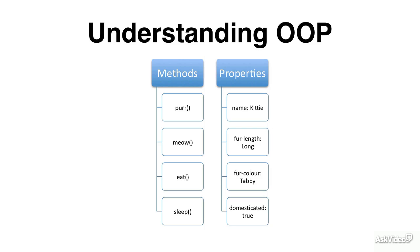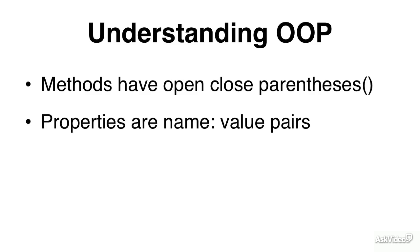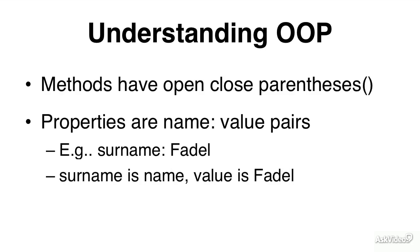Notice that the properties have a name value pair with a colon beforehand. Methods have an open close parenthesis. Properties are name value pairs. For example, surname is Fidel. So the surname part is the name. The value part is the Fidel.